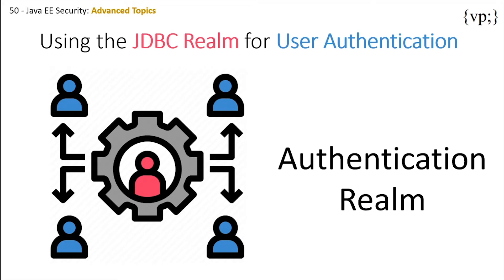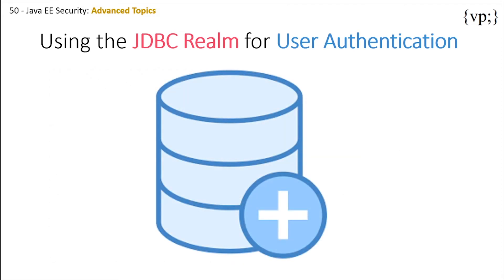Now let's talk about using JDBC Realm for user authentication. An authentication realm, sometimes called a security policy domain or security domain, is a scope over which an application server defines and enforces a common security policy over a collection of users. Essentially, all users underneath this authentication realm umbrella will have the same security policies. A realm can be thought of as a database of usernames and passwords that identify valid users of a web application, with an enumeration of the roles associated with each valid user.